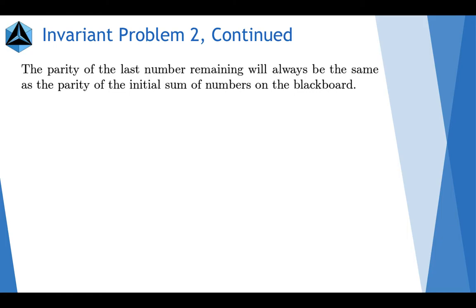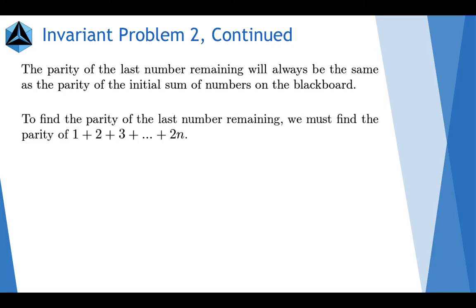So, the parity of the last number will always be the same as the parity of the initial sum. If the last number is odd, the initial sum would have to be odd. If the last number is even, the initial sum would have to be even. With this piece of information, all we have to do is find the parity of the summation of the initial numbers, 1 plus 2 plus 3 through 2n.